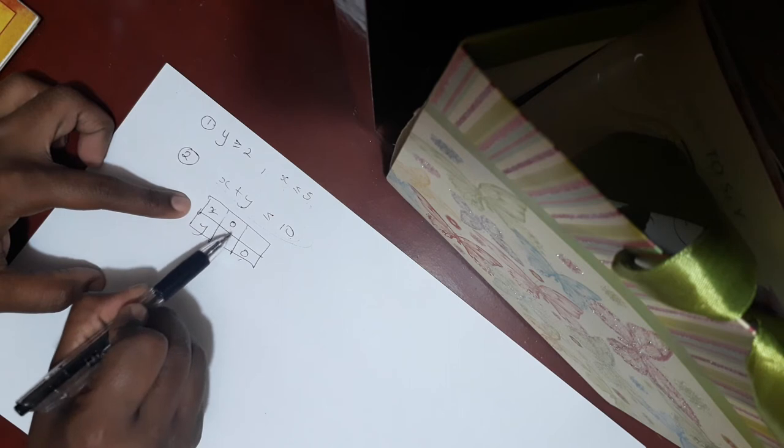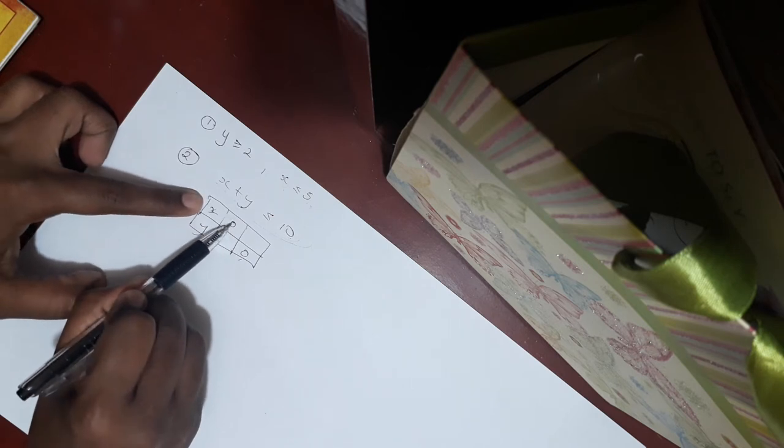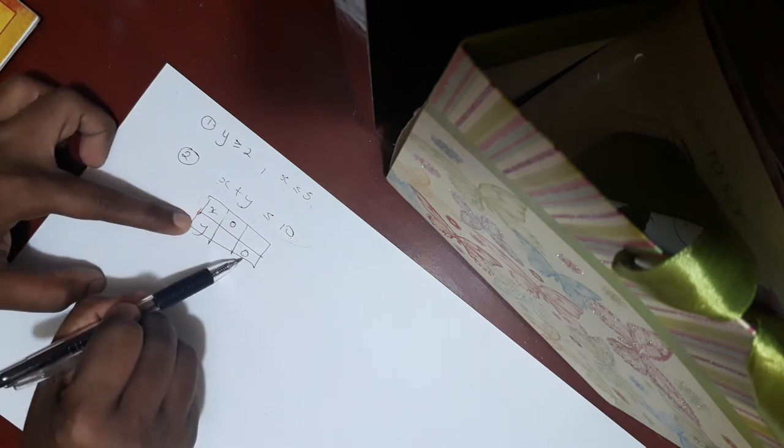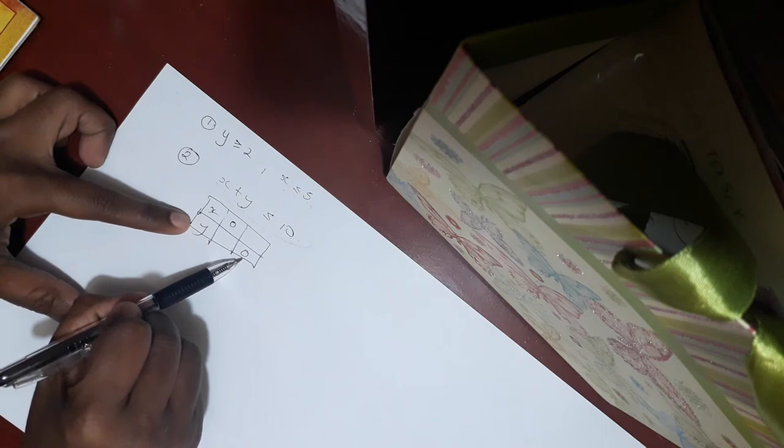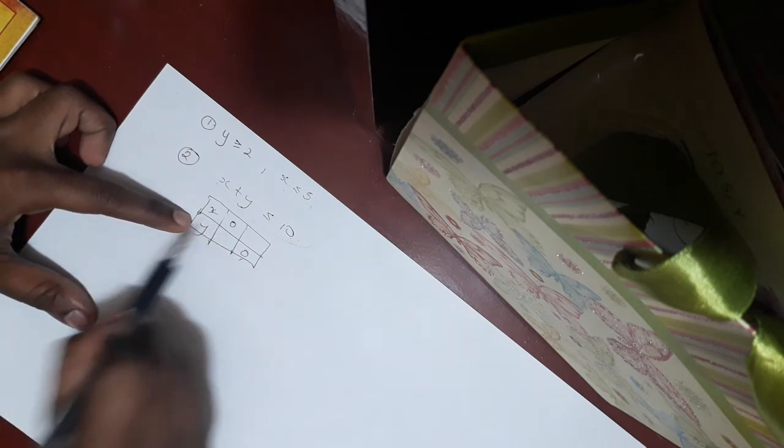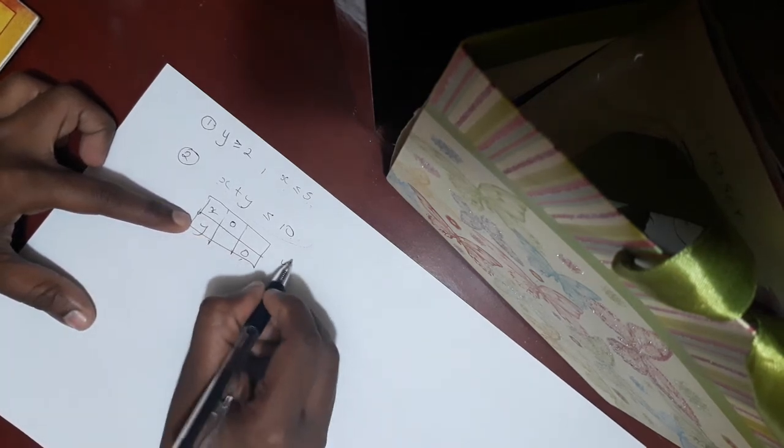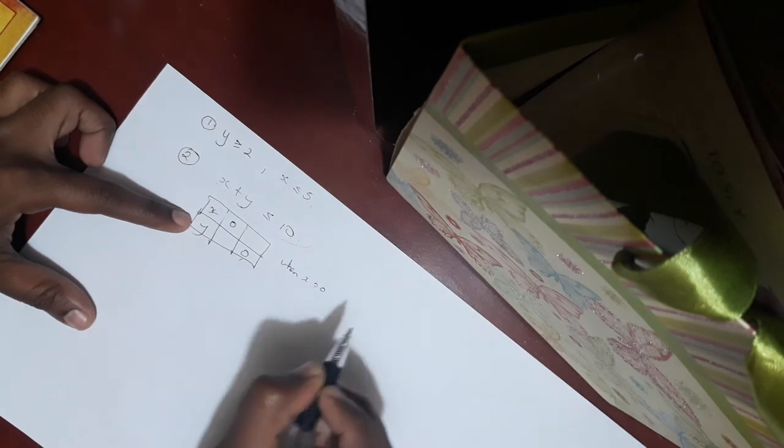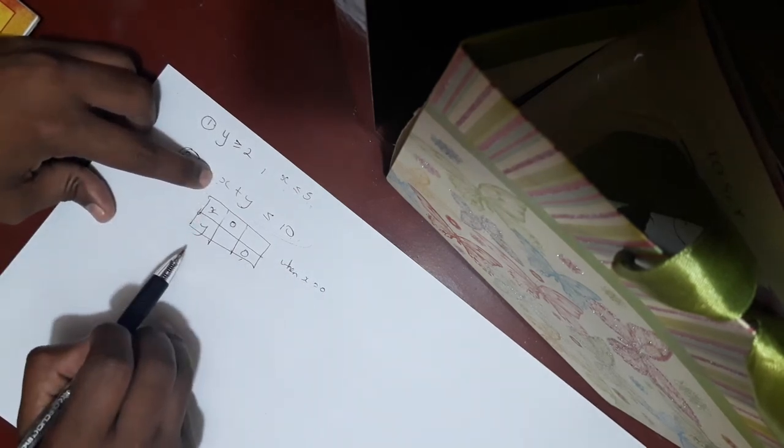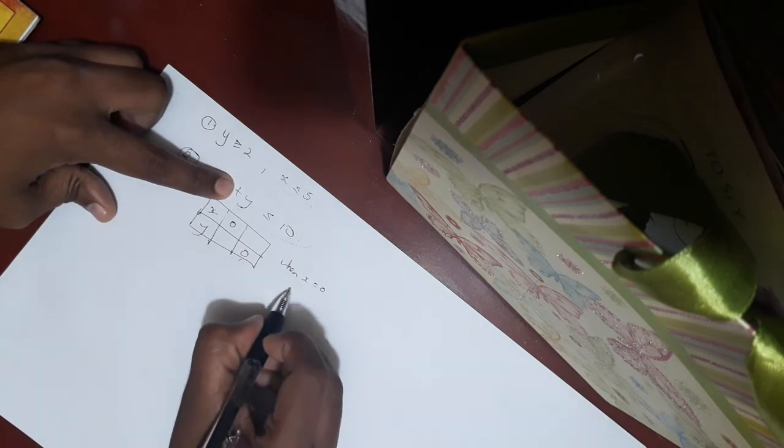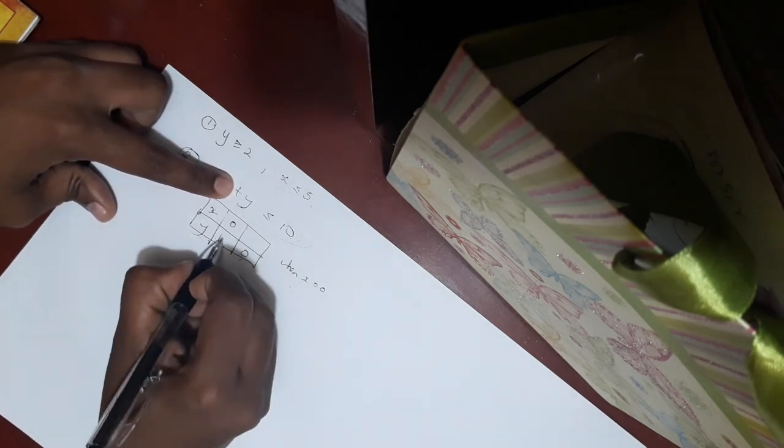You use the crisscross method of putting a 0 in one location for x and a 0 in one location for y. When you do this crisscross method, you simply, when x is 0, so when x is 0, you substitute that into this equation. If x is 0 here, y will obviously be equal to 10. You put it in.